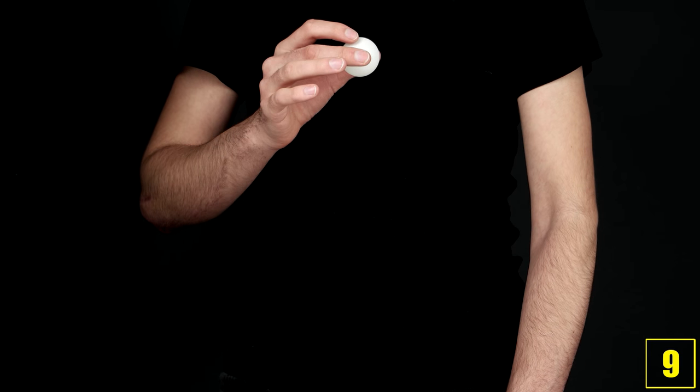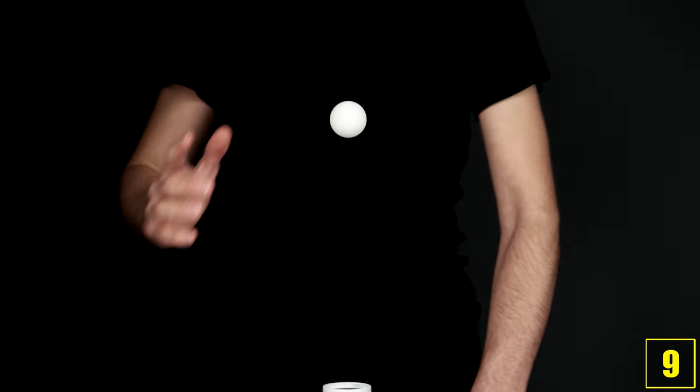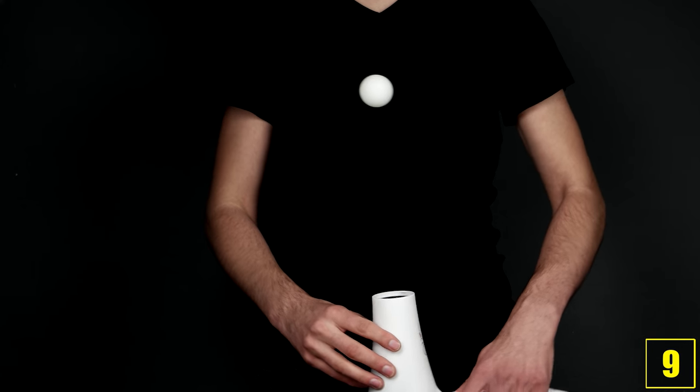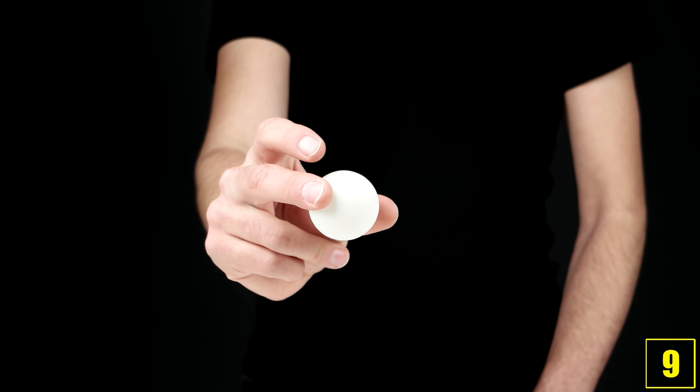Take a table tennis ball and let it float in the air like this. Take your hairdryer and carefully place the table tennis ball in the hairdryer's airstream. Depending on how strong your hairdryer is, the table tennis ball will float in the air 10 to 20 inches away.